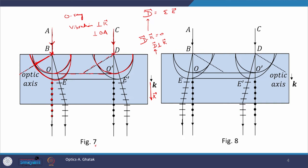For the extraordinary ray, we draw the ellipsoid of revolution by rotating this ellipse around the optic axis. The similar procedure is repeated for the E ray starting from point D — we draw an ellipse and orient it so that its minor axis is along the optic axis. We then draw a common tangent to the two ellipsoids, which is the line EE′. This line EE′ represents the wavefront of the extraordinary ray.